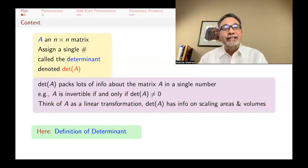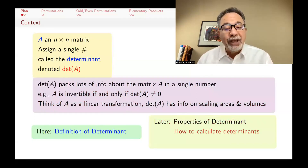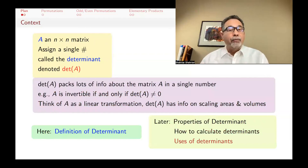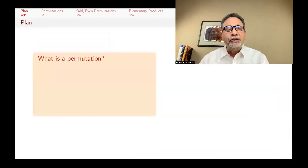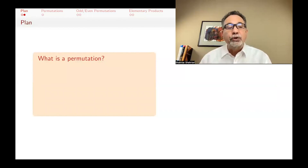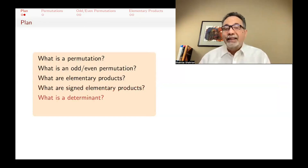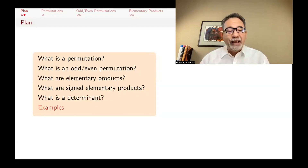Here, I'm going to give you the definition of determinants. In later videos, we will talk about properties of determinants, how to calculate them, and what the uses are. The plan for this lecture is: first, tell you what a permutation is. There are several ways of defining determinants, and I've chosen one. For that, I need to explain permutations, odd and even permutations, elementary products, signed elementary products, and then the definition of a determinant. Then I will give some examples.